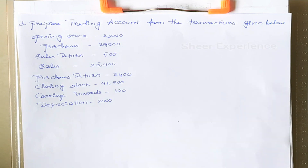I have made a separate introduction video in which the trading account format and bifurcation of direct and indirect expenses are provided in the form of a chart. If you are not aware of the format, you can watch it — I'll leave the link in the description below.